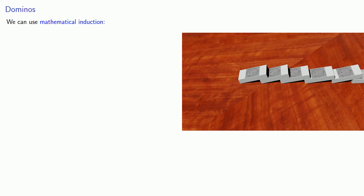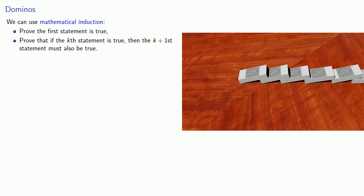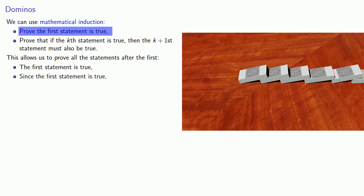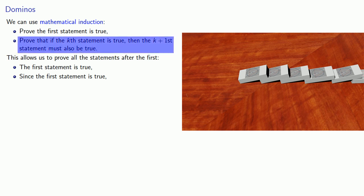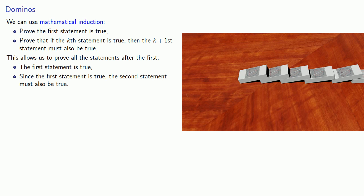The proof by mathematical induction works as follows. We'll prove the first statement is true, then we'll prove that if the kth statement is true, then the k+1st statement must also be true. This allows us to prove all the statements after the first. So for example, we have proven the first statement is true, and since we've proved that if the kth statement is true then the k+1st must also be true, we know that the second statement must also be true.